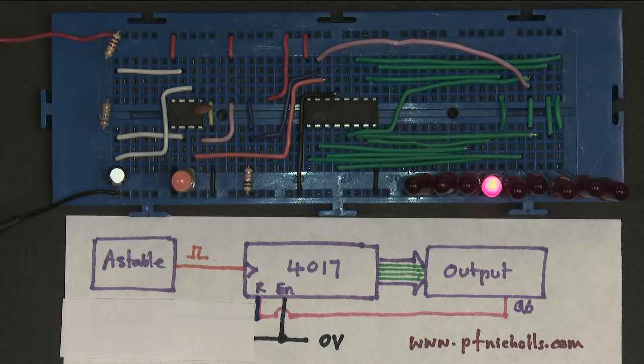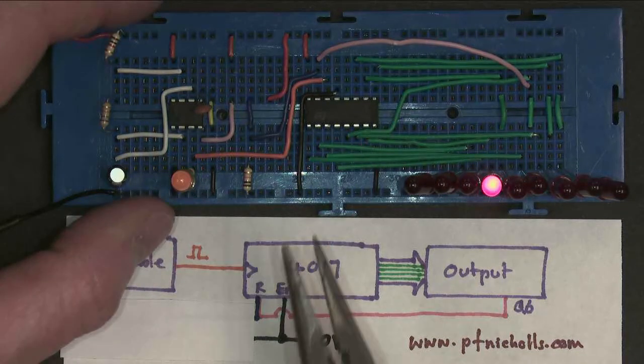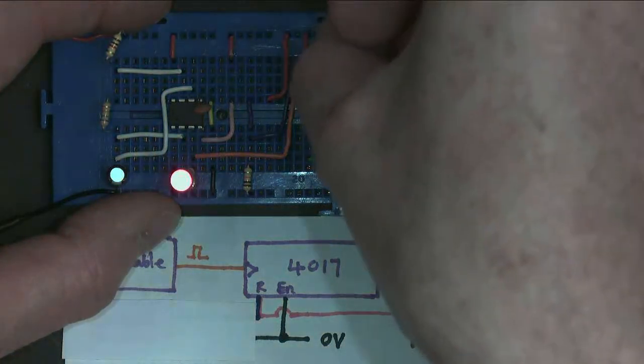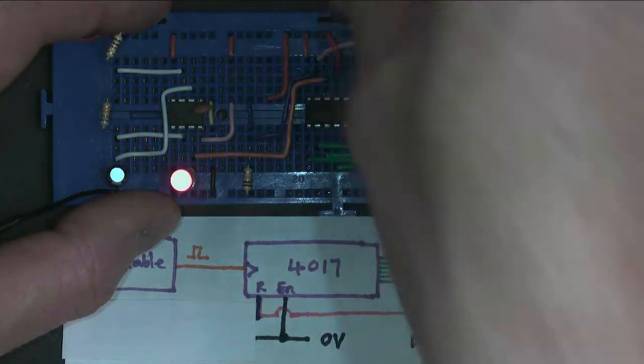So to make the 4017 chip count reliably, you have to have the enable connected to 0. And to stop it counting completely, you have to have it connected to positive. And like any other input, you shouldn't leave it floating.